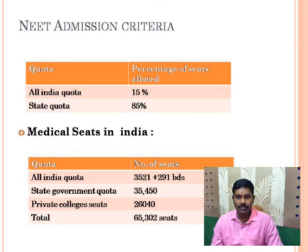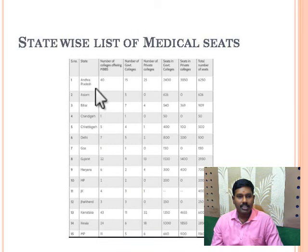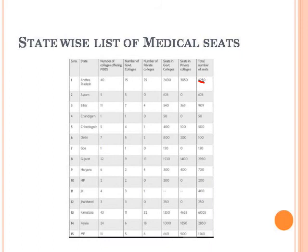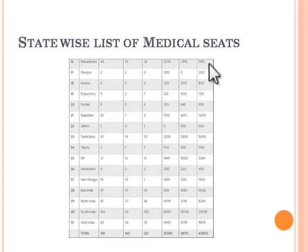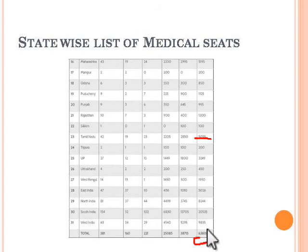Now let's look at the states and their number of MBBS seats. Andhra Pradesh has 6,000 seats. Karnataka has 6,000 seats, Maharashtra has 5,000 seats, Puducherry has 1,100 seats, and Tamil Nadu has 5,000 seats. The total amounts to approximately 63,800 seats, which has now increased to 65,000 due to the addition of new medical colleges accredited by the Medical Council of India.